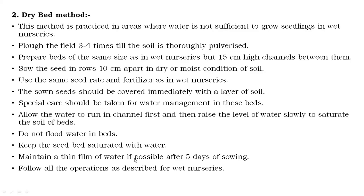Maintain a thin film of water if possible after five days of sowing, and then follow all the operations as prescribed for the wet bed nursery. If nitrogen deficiency is observed in the nursery, apply nitrogen as a top dressing to avoid nitrogen deficiency. If zinc deficiency is observed, zinc sulfate should be sprayed two times — at 10 days after sowing and at 20 days after sowing. This is the dry bed method.